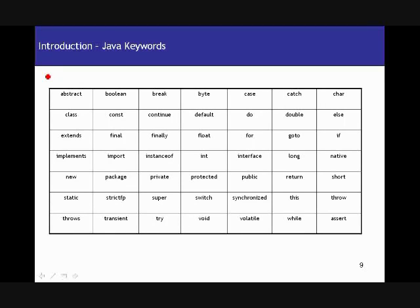Java keywords. This table on the current slide actually lists out all the keywords which we have in Java. It's got a total of 49 keywords, and this is as per the JDK 1.4.2 version.